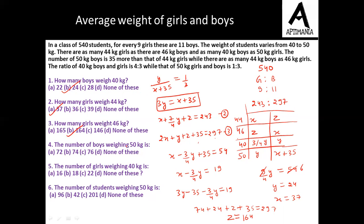The number of boys weighing 50 kg is x plus 35. X was 37, so the total becomes 72. Number of girls weighing 40 kg is 3 by 4 of y, so 3 by 4 of 24, that is 18. And the number of students weighing 50 kg total is x plus y plus 35, so 24 plus 37 plus 35, which is 96. So this was an easy question based on equations.